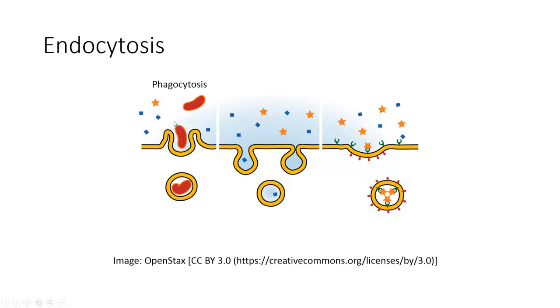In this example we have this red bacterial cell here, and we can see that the cell membrane is forming a pouch around the bacterium. Eventually the two sides of the pouch will meet in the middle, and the bacterium will be brought into the intracellular environment surrounded by some plasma membrane.